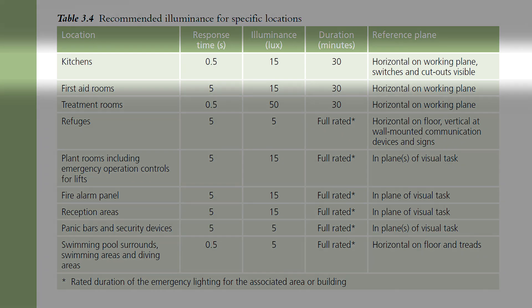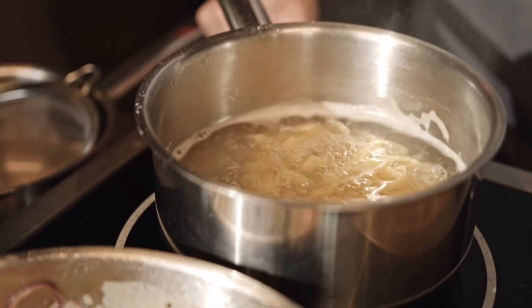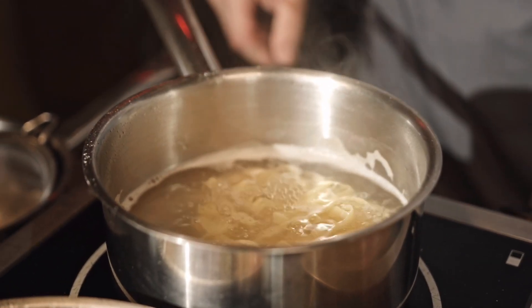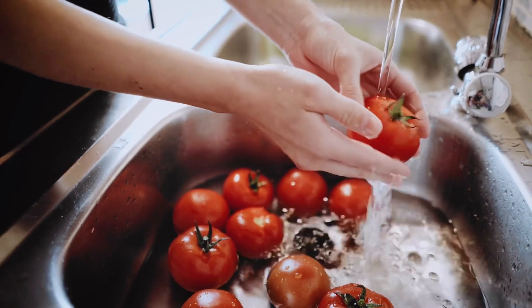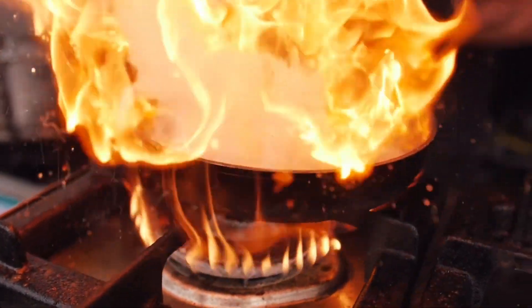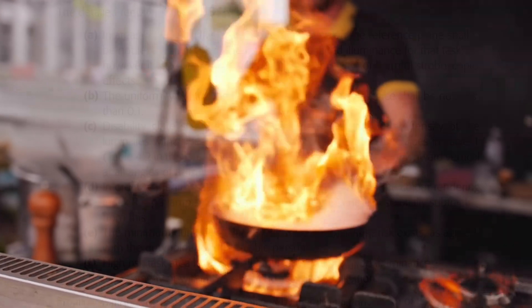Interestingly, this information is repeated in the SLL Guide to Lighting, but elsewhere in that document it seems to contradict itself — stating that the required emergency lighting level in a kitchen should be 15 lux on the reference plane. The way to understand this seeming discrepancy is to view the two pieces of information as complementary. In a kitchen there are different tasks with different levels of risk, so while 15 lux would be okay in lower risk areas, for the specific higher risk tasks you'd apply the more stringent 10% value.